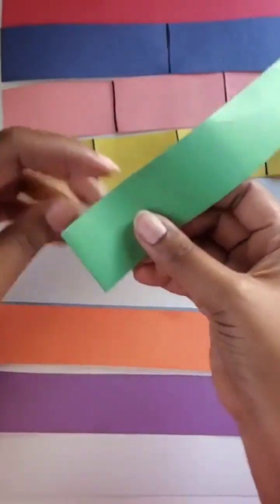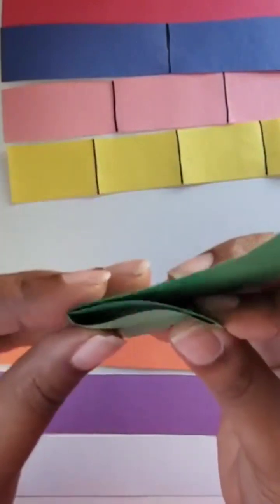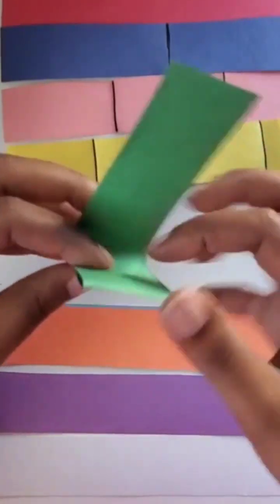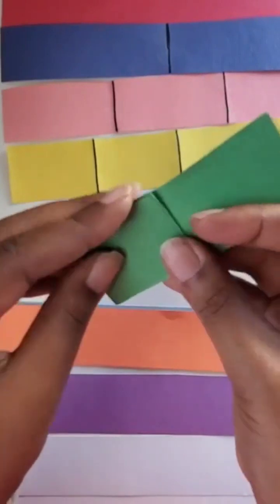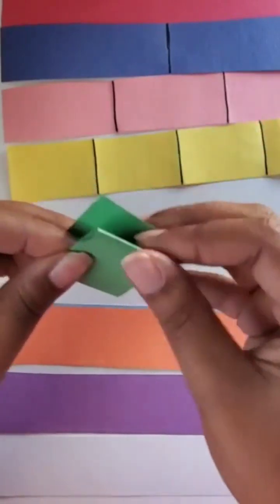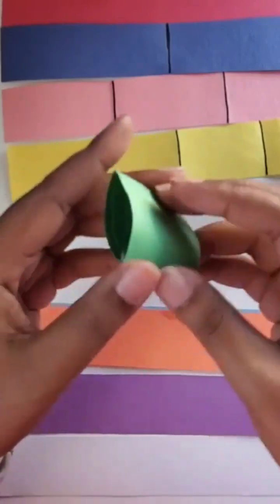So then I just fold that in five times, or it's probably four times, and that creates my fifths.